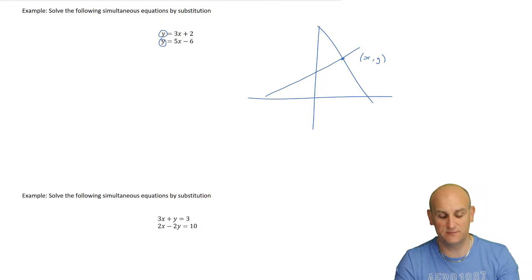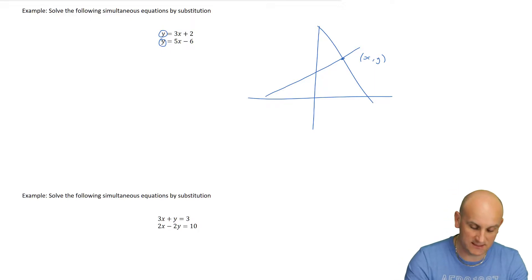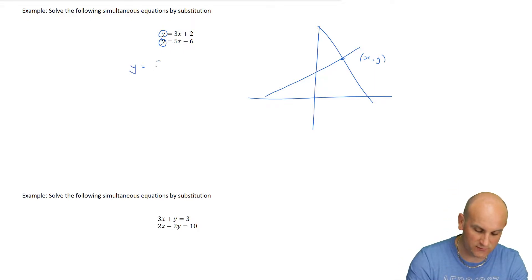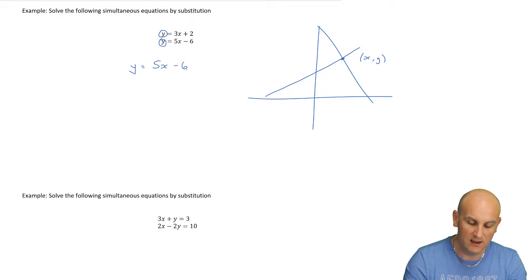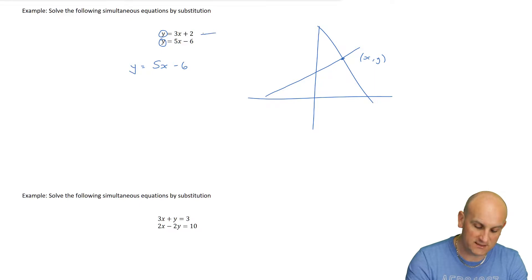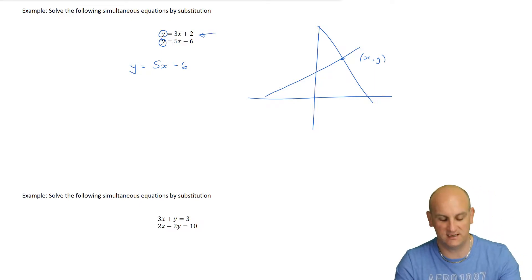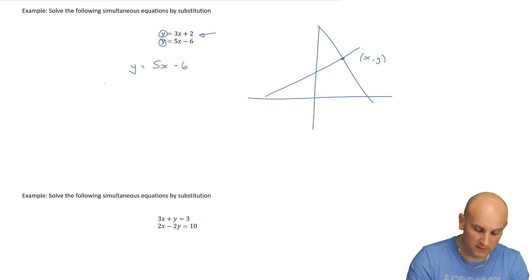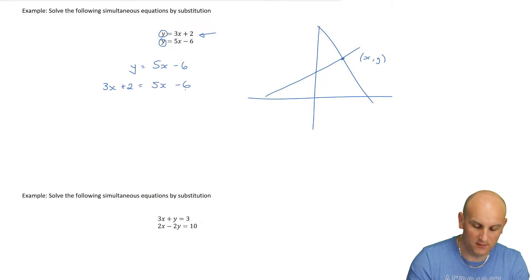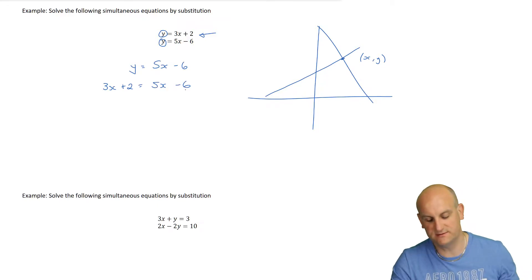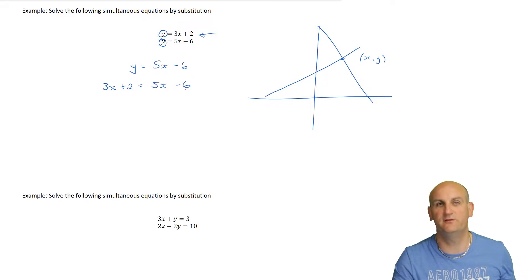So I can substitute - I take my second equation y equals 5x minus 6, and I know from my first equation that y equals 3x plus 2, so I literally write that under my second equation. I end up with 3x plus 2 equals 5x minus 6.